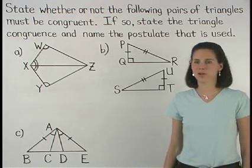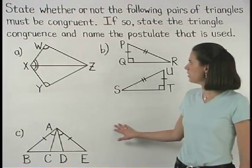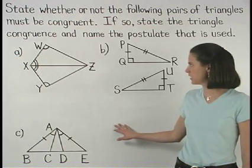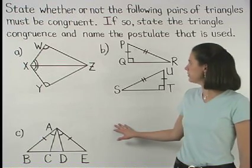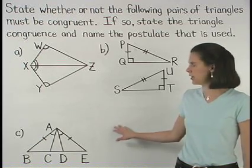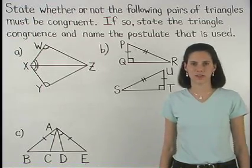In this example, we're asked to state whether or not the following pairs of triangles must be congruent, and if so, state the triangle congruence and name the postulate that is used.